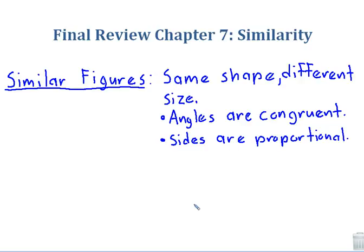Same shape, different size. Mathematically that means those two shapes have angles that are congruent, so the angles are equal to each other, and then the sides are proportional. The scale factors of the sides are going to be equal to each other. Let's take a look at some problems that deal with similarity.